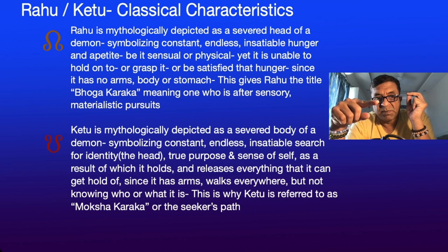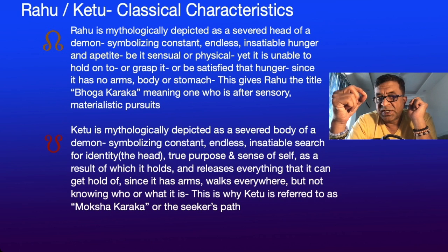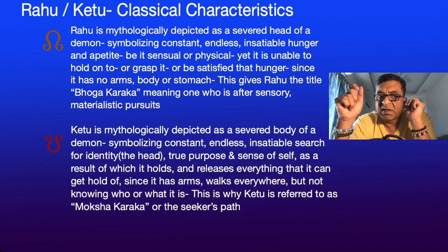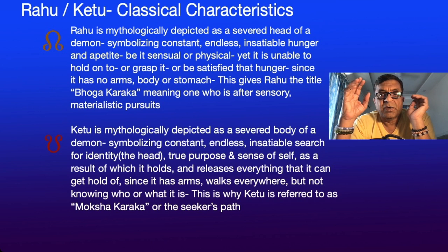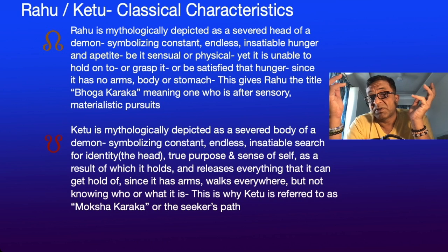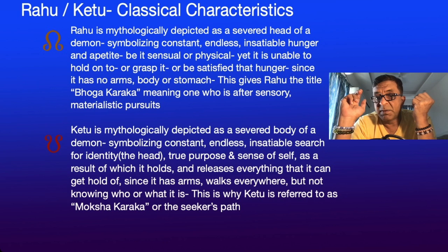Rahu is mythologically depicted as the severed head of a demon, symbolizing constant, endless, insatiable hunger and appetite — be it sensual or physical — yet it is unable to hold on to or grasp it. Think of it as a live head only, with no body. It can't hold on to anything or be satisfied even if it gets something, since it has no arms, body, or stomach. This gives Rahu the title of Bhogakaraka — one who is after sensory, materialistic pursuits.